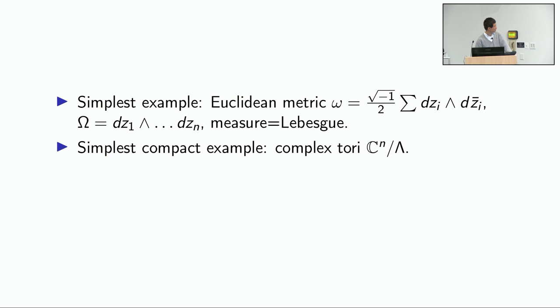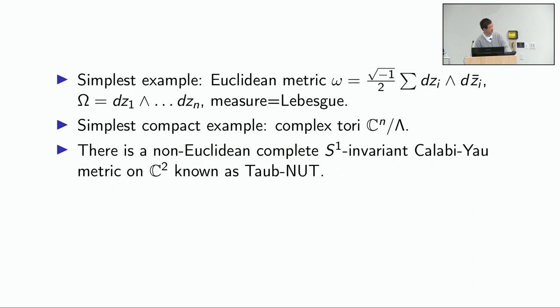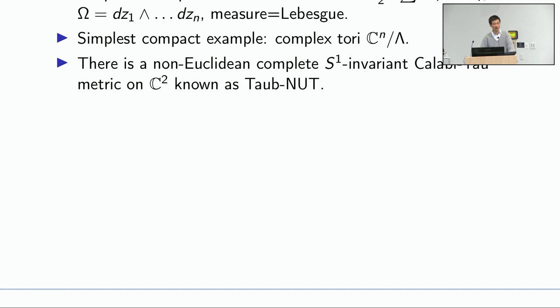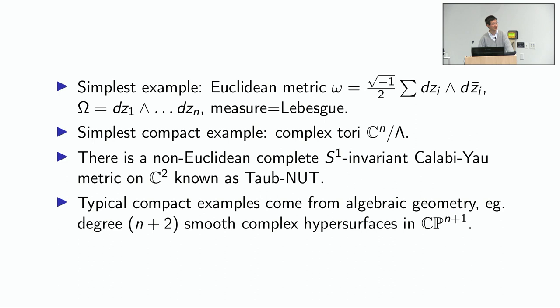The simplest example is the Euclidean measure. The simplest compact example, and in some sense the only explicit compact example, is the complex tori where you quotient out by some lattice. As a general culture fact, there is a non-Euclidean complete S1-invariant Calabi-Yau metric on C^2, known as the Taub-NUT metric. Most examples of Calabi-Yau metrics are not explicit — Yau's theorem is a very powerful existence theorem that doesn't give you an explicit construction.